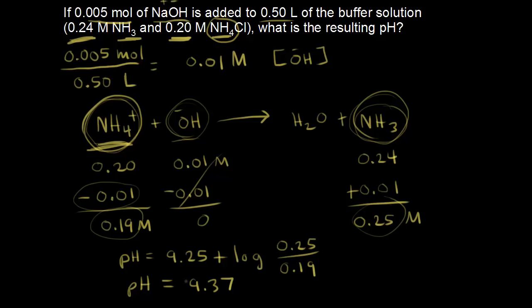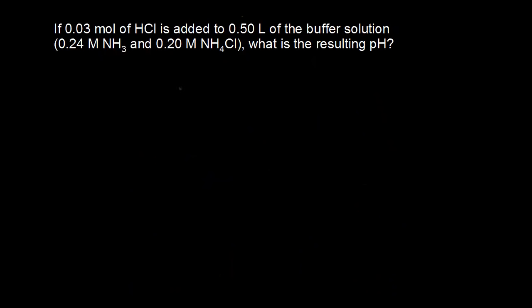Comparing to the original buffer pH of 9.33: we added a base and the pH went up only a little, from 9.33 to 9.37. This shows mathematically how a buffer solution resists drastic changes in pH. Next, we'll look at what happens when you add some acid.